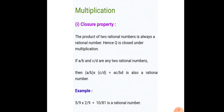Let's start with the closure property of multiplication. According to this property, if we multiply two different rational numbers, the result is also a rational number. For example, we take 5/9 and 2/9 and multiply them — we get 10/81, which is also a rational number. A rational number is a number that can be written in the form p/q, where q ≠ 0 and p and q are integers.